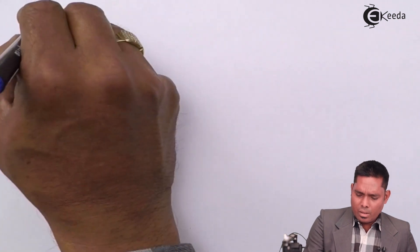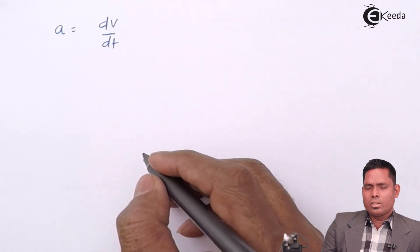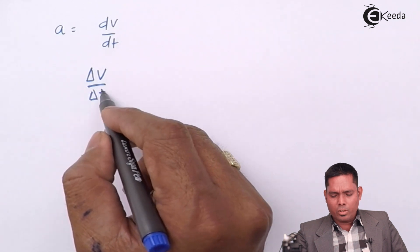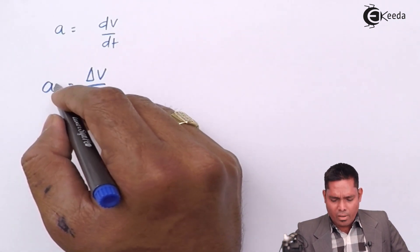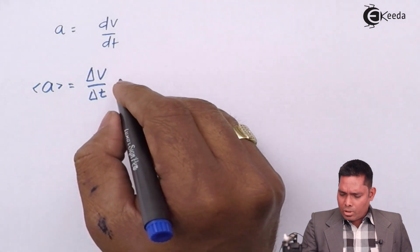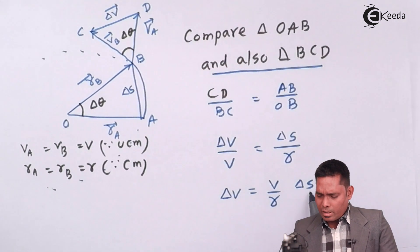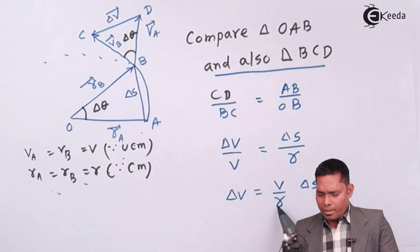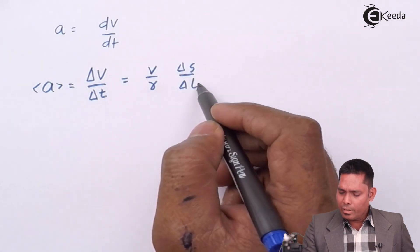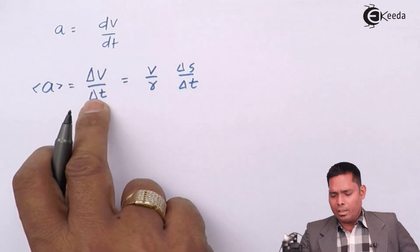The body takes time delta-t to move from A to B, so this change in velocity occurs in time delta-t. Dividing both sides by delta-t: delta-V / delta-t = (V / R) × (delta-S / delta-t). This gives us the average acceleration over the interval delta-t as (V / R) × (delta-S / delta-t).